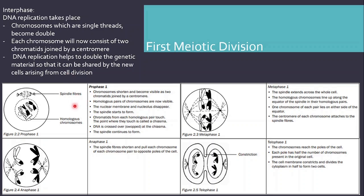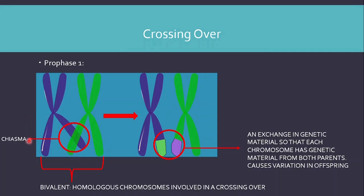In prophase I, the chromosomes shorten and become visible as two chromatids joined by a centromere. Homologous pairs of chromosomes are now visible. The nuclear membrane and nucleolus disappear, and the spindle starts to form. Chromatids from each homologous pair touch, and where they touch it is called a chiasma. The two parts of the chromatids of these chromosomes overlap at that point. If there is more than one, they are called chiasmata.